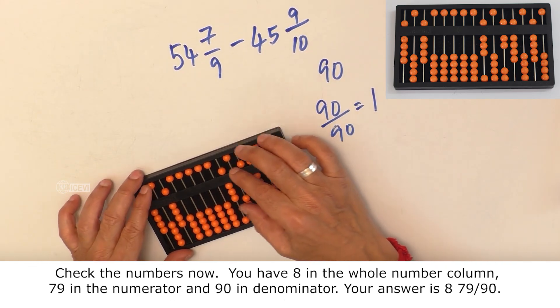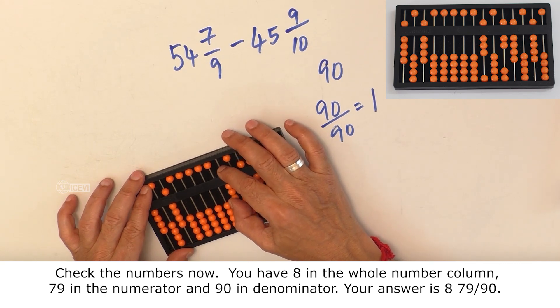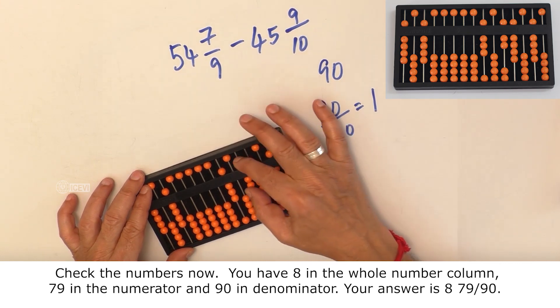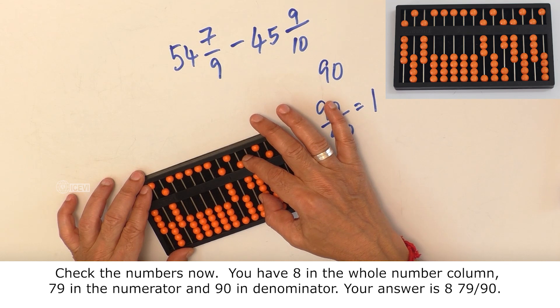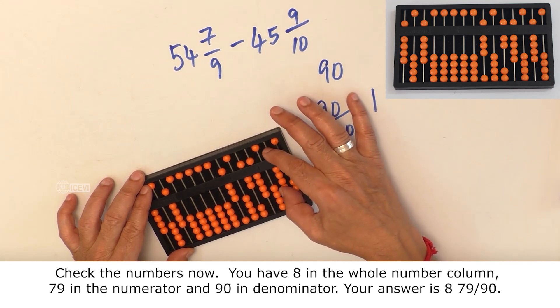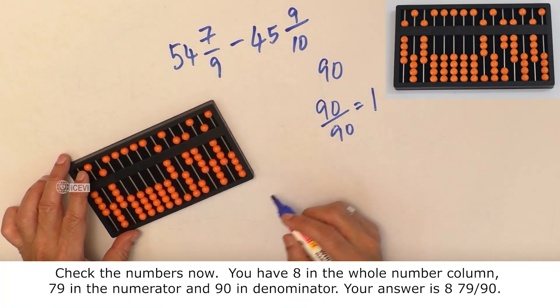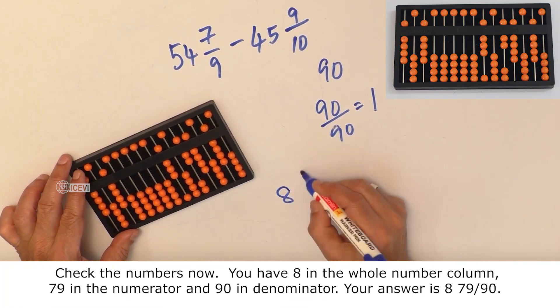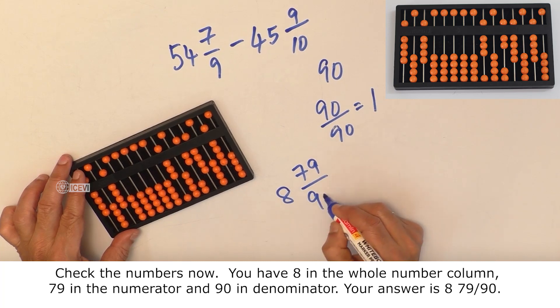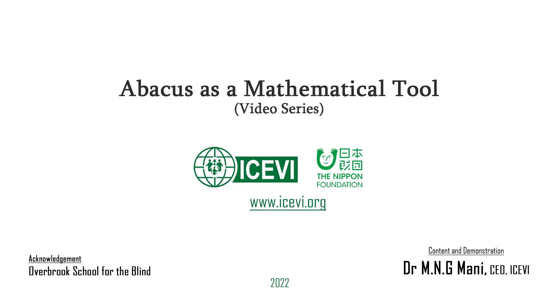Check the numbers now. You have 8 in the whole number column, 79 in the numerator, and 90 in the denominator. Your answer is 8 79/90.